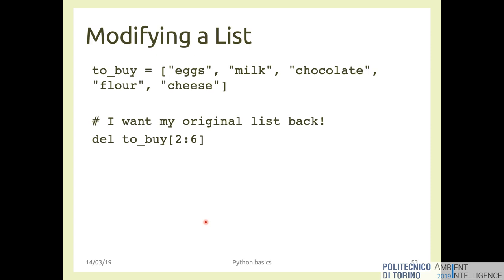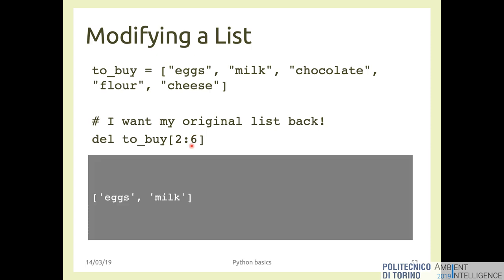Another statement is the `del` keyword. It can delete a portion of a list: for example, `del to_buy[2:6]` deletes everything from index 2 up to index 6 (excluded). You can also delete a single element like `del to_buy[6]`, or delete multiple elements at once. After running `del to_buy[2:6]`, printing `to_buy` will give you only 'eggs' and 'milk'.